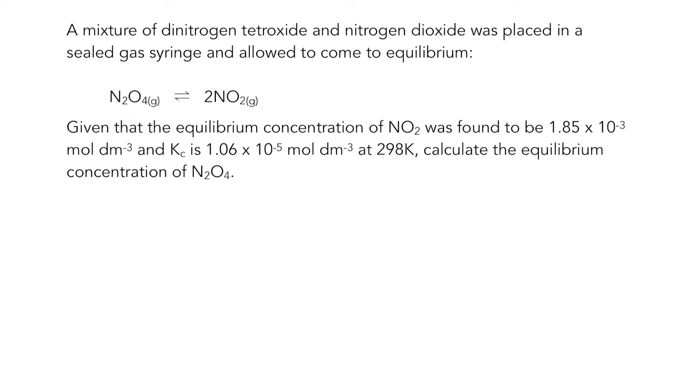So in this one we've got a mixture of dinitrogen tetroxide, that's our N2O4, and nitrogen dioxide sealed into a gas syringe, allowed to come to equilibrium. We are given the equilibrium concentration of NO2.